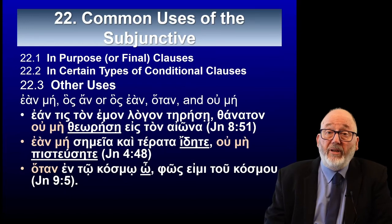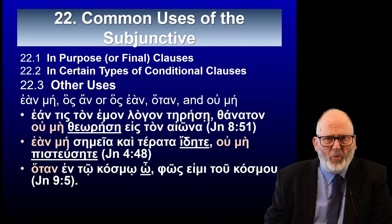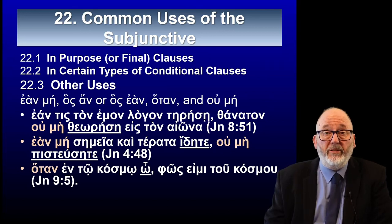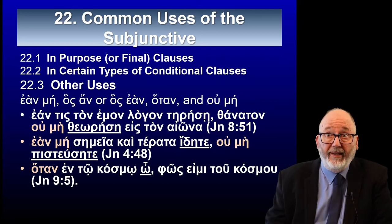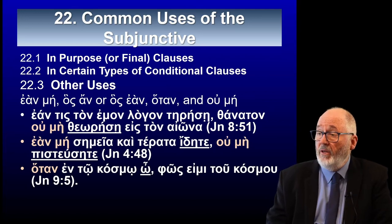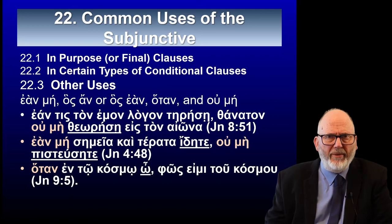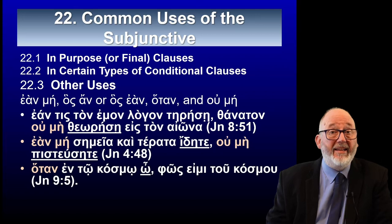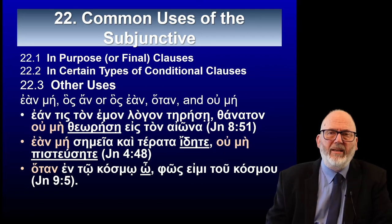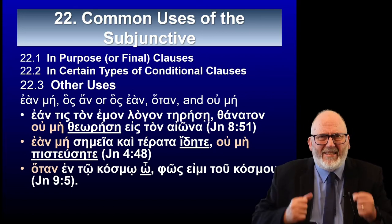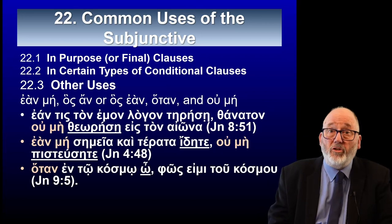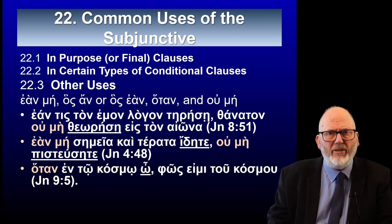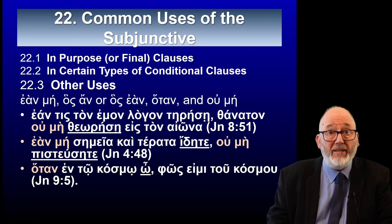Several other words are almost always followed by a verb in the subjunctive mood in the Greek New Testament: ean mē (unless), hos an or hos ean (whoever), hotan (whenever), and ou mē (definitely not). Ou mē is not just 'not' — it's definitely not. It's described as strong denial.